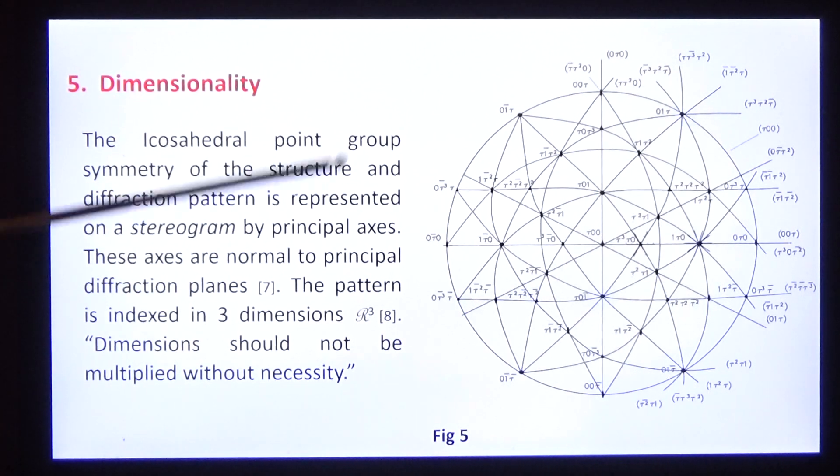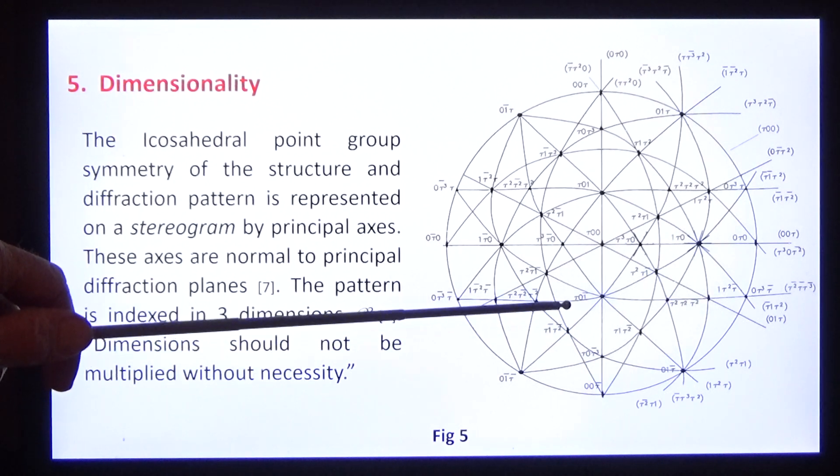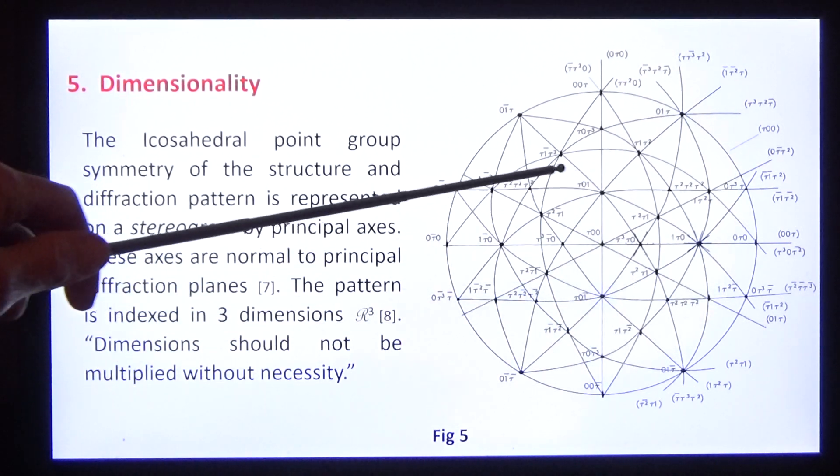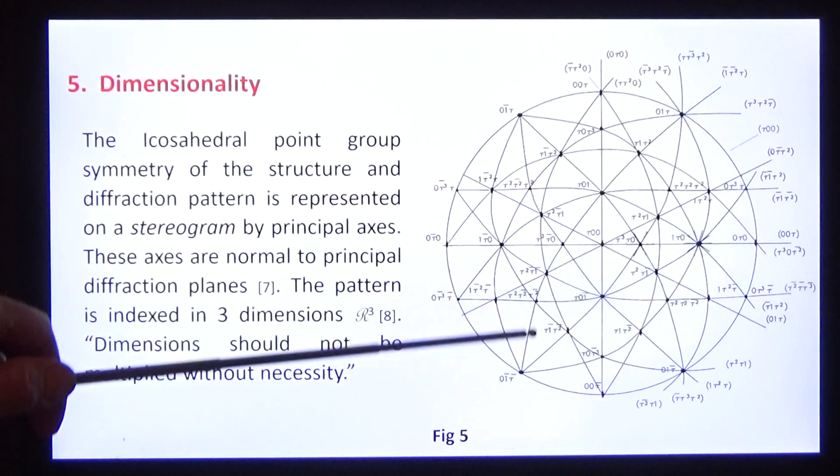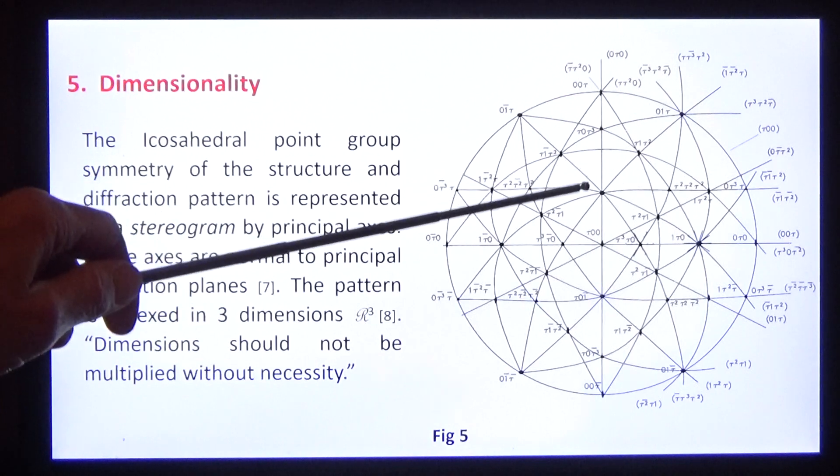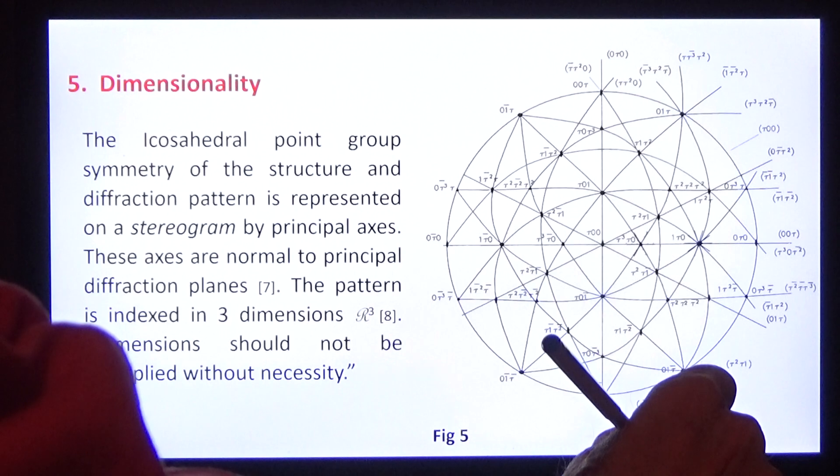We know the structure, so we can calculate the diffraction. First you must correct the indexation. Here's a stereogram of the principal axes. Normal to the principal axes are the diffraction planes. They are all three-dimensional, geometric, simple, and complete. Dimensions should not be multiplied without necessity.